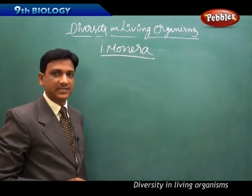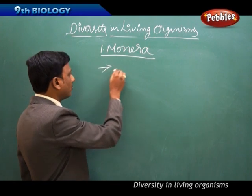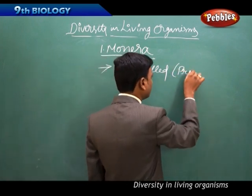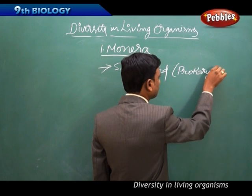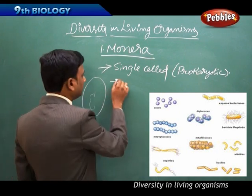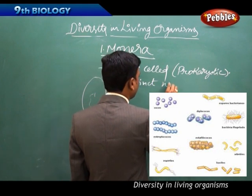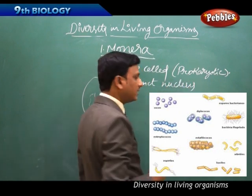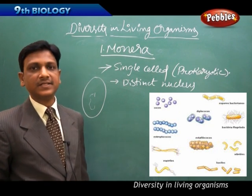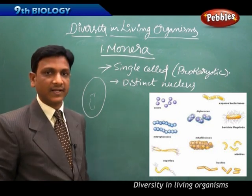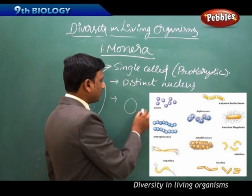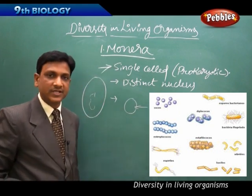In the Monera kingdom, single-celled organisms are included. They are all single-celled. Their nature is prokaryotic, meaning they don't have a distinct nucleus. Their nucleus is not covered by any nuclear membrane. That is the main characteristic feature of Monera organisms. They live as single-celled throughout their life. Monerans absorb nutrients directly from their surroundings.